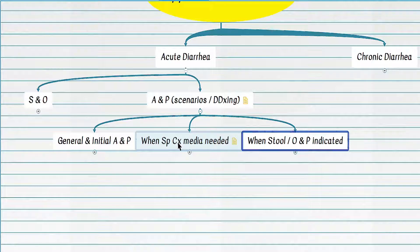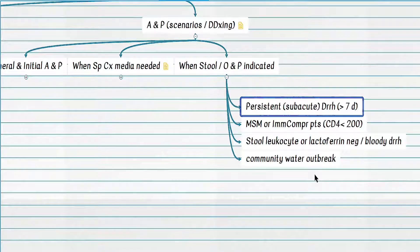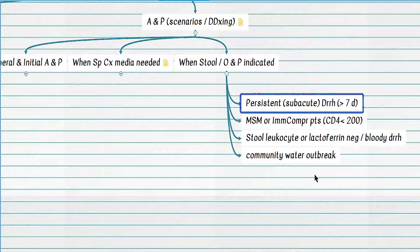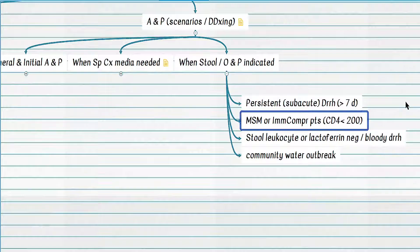Other indications for stool assessment for ova and parasites include: persistent or subacute diarrhea; stool leukocytes or lactoferrin negative in a patient with bloody diarrhea; diarrhea in immunocompromised patients, especially AIDS patients with CD4 less than 200; diarrhea in homosexual men; and diarrheal cases occurring in community water outbreaks.